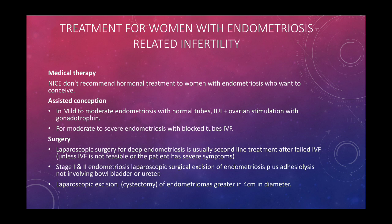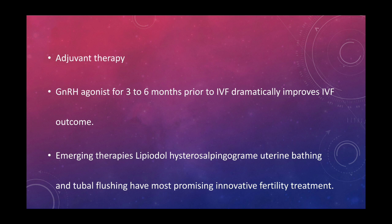For endometriosis-related infertility, hormonal treatment is not recommended for women who want to conceive. In mild to moderate endometriosis with normal tubes, IUI plus ovarian stimulation with gonadotropins is used. For moderate to severe endometriosis with blocked tubes, IVF is recommended. Laparoscopic surgery for deep endometriosis is usually second-line after failed IUI or IVF. For Stage I or II endometriosis, laparoscopic surgical excision of endometriosis plus adhesiolysis is performed. Laparoscopic excision of endometriomas greater than four centimetres is done. Adjuvant GnRH agonist for three to six months prior to IVF dramatically improves IVF outcomes. Emerging therapies include lipiodol hysterosalpingogram, uterine bathing, and tubal flushing.